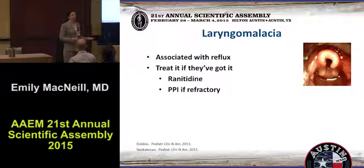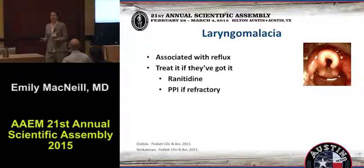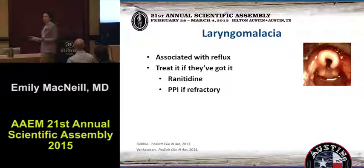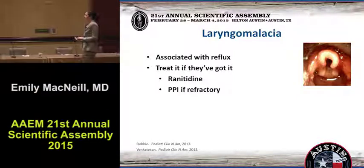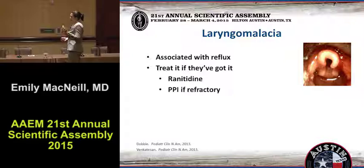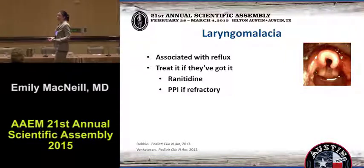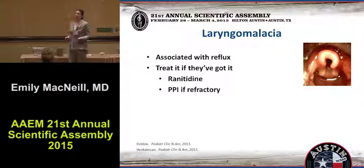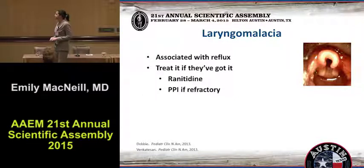Laryngomalacia is associated with reflux. Whether that's the chicken or the egg, nobody really knows. Do you have so much negative intrathoracic pressure because you have stridor that you're pulling up your gastric contents? Or does reflux cause chronic inflammation and more cartilaginous laxity? No one knows. The bottom line is reflux is fairly easy to treat, so we do it. If you see a kid with laryngomalacia, they're going to end up on ranitidine at some point. Kids grow out of this — they do fine.